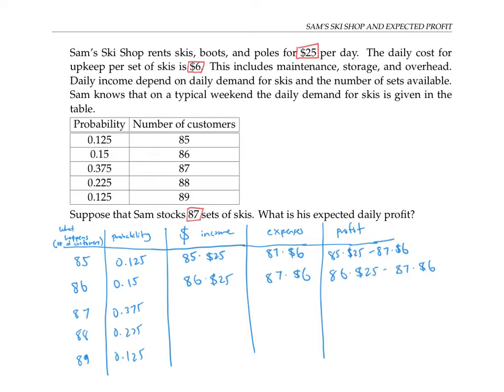If 87 customers show up, he'll rent all 87 skis, and he'll pay the maintenance for all 87.